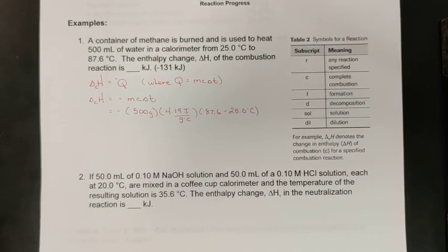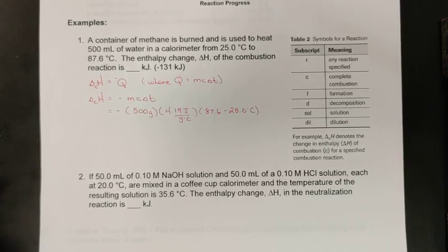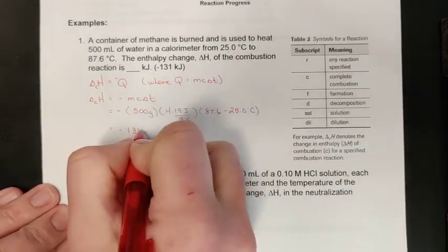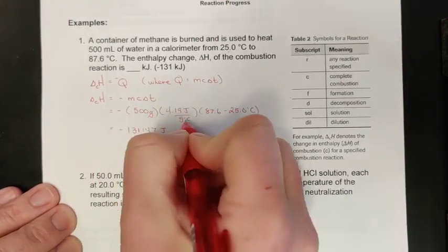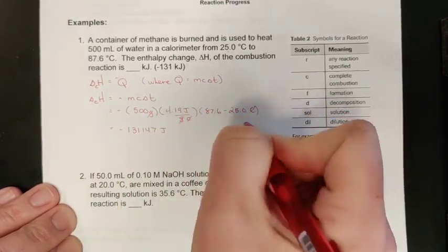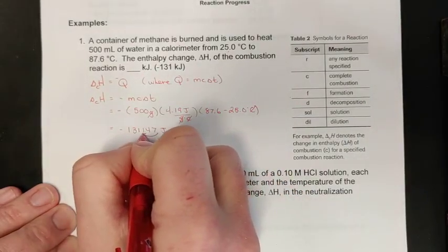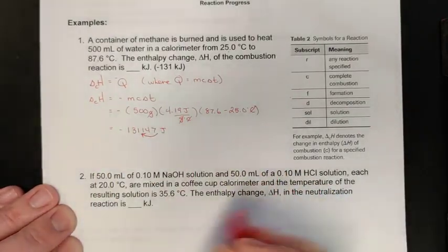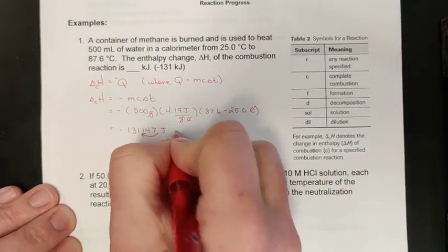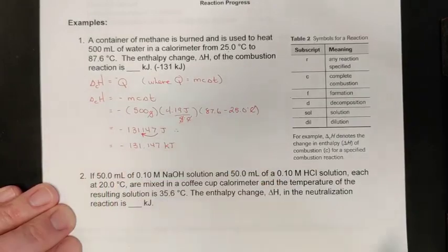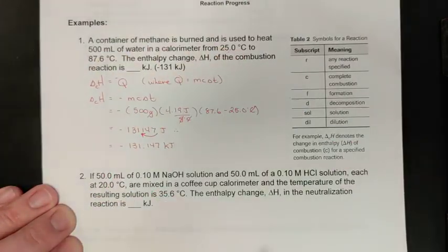I have a heating up of water, so it finishes at 87.6 and started at 25.0 degrees Celsius. Run that through your trusty TI calculator—it's 500 times 4.19 times the difference between 87.6 and 25, and that works out to 131,147 joules. For this we needed an answer in kilojoules, so I'm going to move my decimal place three spots.